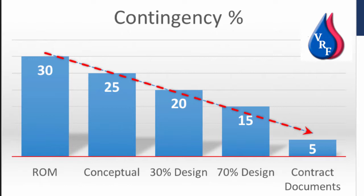As a design progresses, the contingency factor can be reduced because you're getting more detail and definition of the design, which you can put accurate costs to. The construction contingency is to cover unanticipated or unpredictable costs that could occur during construction and after you have signed a contract.